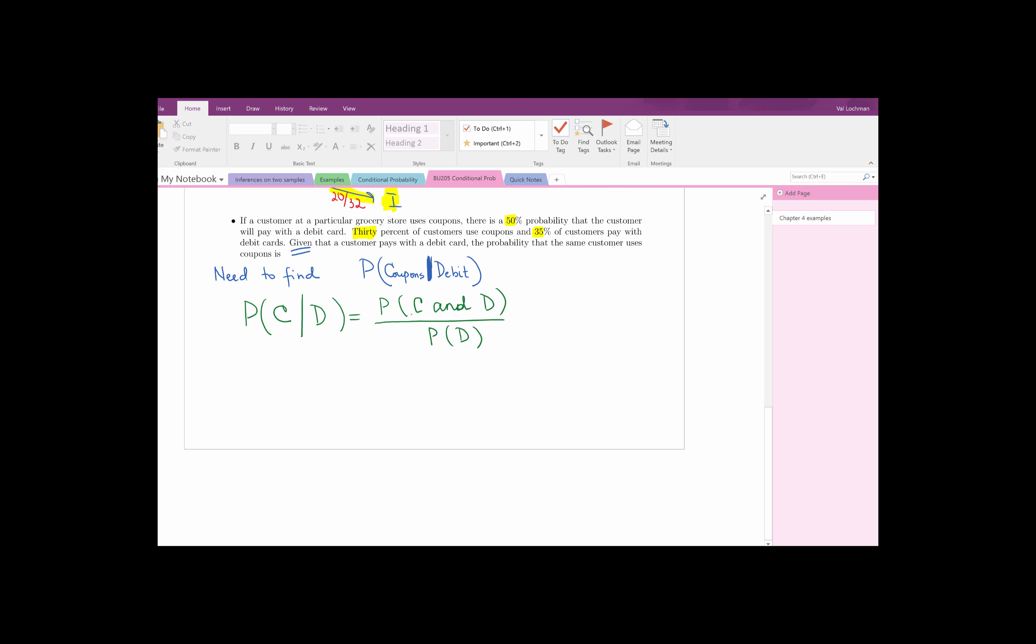So the probability that a customer is using coupons AND a debit card - what is that? And means multiplication. What's the percentage of customers that use coupons? 30%, so 0.30. And debit card - well, the first line says if a customer uses coupons, then there is a 50% chance that he or she will also use a debit card, so that's times 0.5. And then the last thing is, what is the probability that a customer uses debit card? 35% of all customers use debit cards, so that's divided by 0.35.